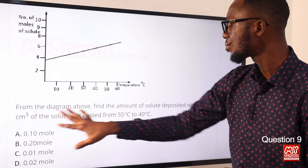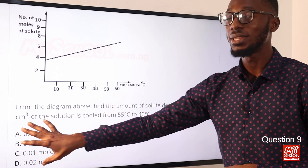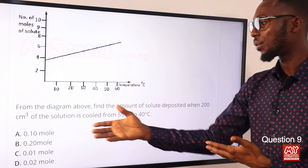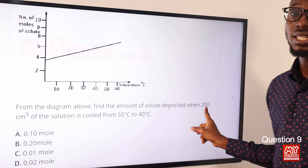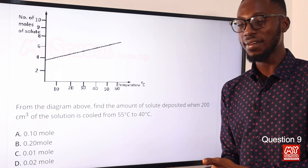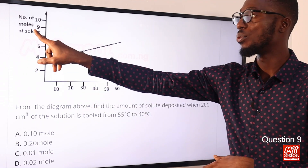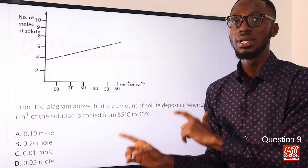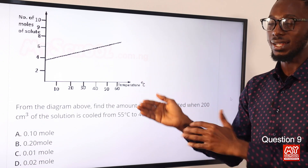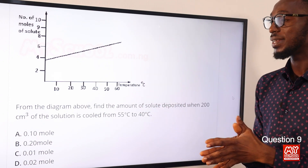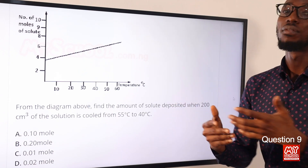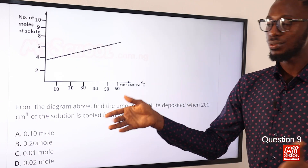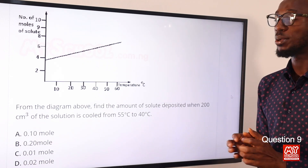We are given 200 cm³. Since 1000 cm³ deposits 1 mole, 200 cm³ deposits x. Cross-multiplying: x = 200 × 1 / 1000 = 1/5 = 0.2 moles. So the correct option is option B for 0.20 moles.